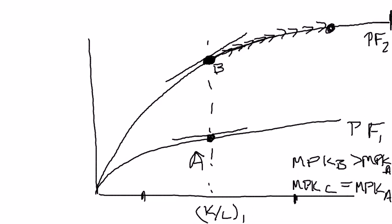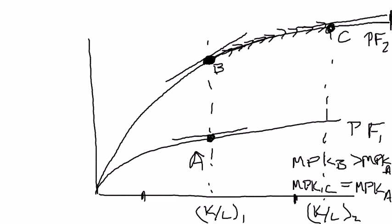We'll pretend C is right here, at capital-labor ratio 2. At point C, if you were to draw the tangent line in there, it's going to be pretty close to what it is at point A — I didn't eyeball it perfectly, but I got pretty close. You can see the point: if the marginal product of capital at point A is less than it is at point B, then due to the principle of diminishing marginal returns, you've got to accumulate more and more capital goods to drive the marginal product of capital down so that they are equal.